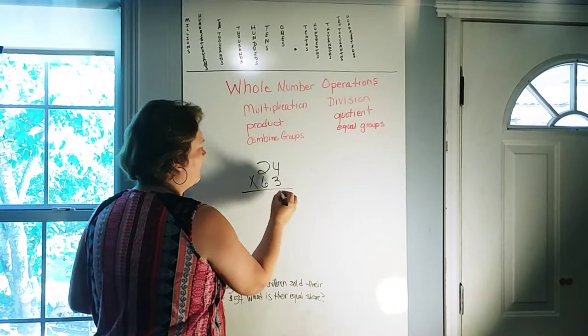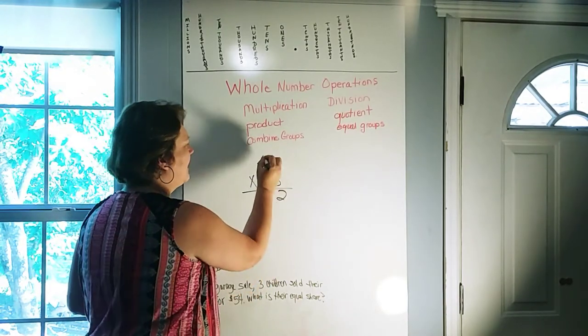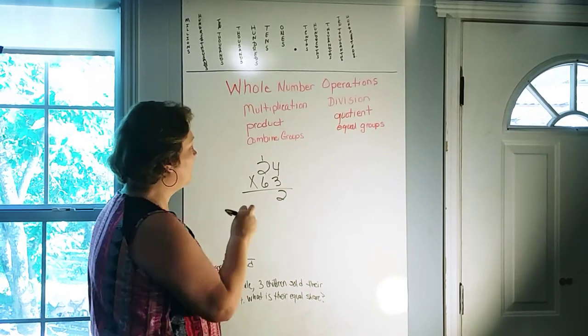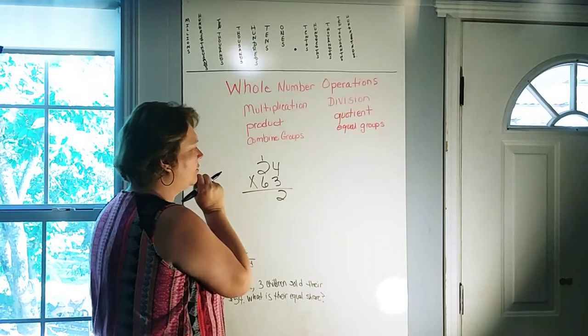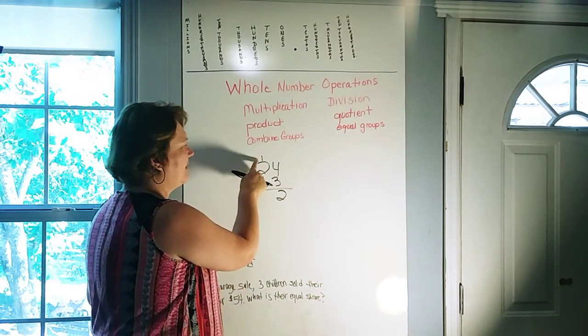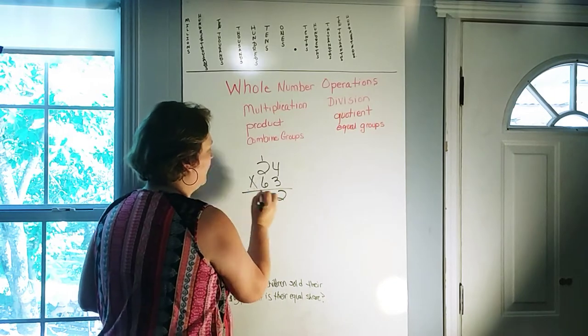So 3 times 4 is 12. We're going to put our 2 down because that's in our ones place. The 1 is in the tens place, so we're going to carry that over and regroup. Now we have 3 times 2, that is 6, plus we have to add the 1 that we brought over. That will give us 7.